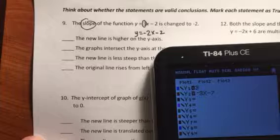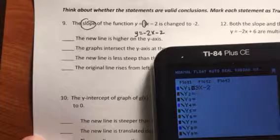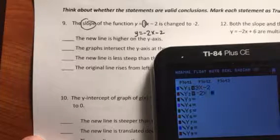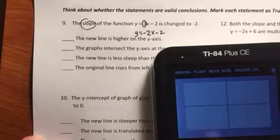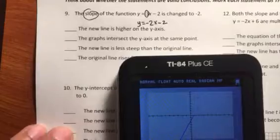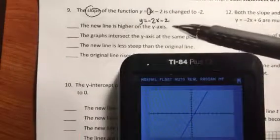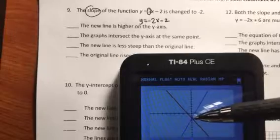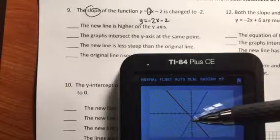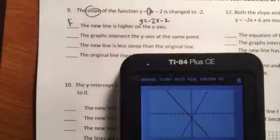So your original is 3x minus 2. And we're changing it to negative 2x minus 2. And I'm going to graph these. So is the new line higher on the y-axis? Well, as you can see, they're both on the y-axis at the same place. So this is a false statement. So that's all you would put is false.